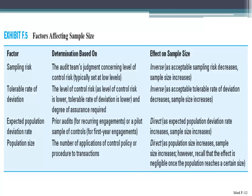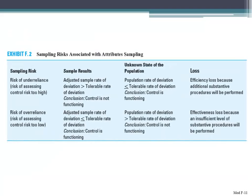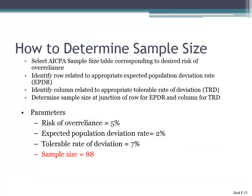Exhibit F7 is if the auditor is willing to accept a 10% risk of overreliance on internal control. So it's whether your confidence interval is 95% or 90%, and those two tables provide you with that. That's what you base your sample size on — those are the AICPA tables.